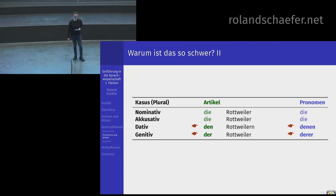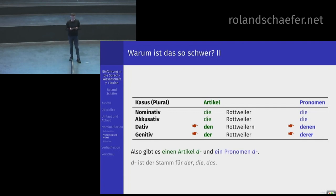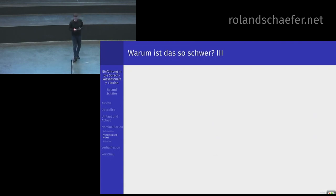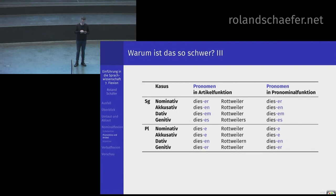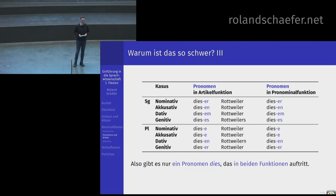Wir haben hier zwei Formenpaare, wo sich die Formen in der pronominalen und in der Artikelfunktion unterscheiden – kann nicht dasselbe Wort sein. Es gibt also einen Artikel de und ein Pronomen de. Im Unterschied dazu steht ein Wort wie dieser: wenn Sie alle Formen angucken, ist die Form immer die gleiche. Dieser Rottweiler stinkt – dieser stinkt. Die Formen sind immer dieselben. Das sagt uns: es gibt nur ein Pronomen dies, das aber in beiden Funktionen auftreten kann.